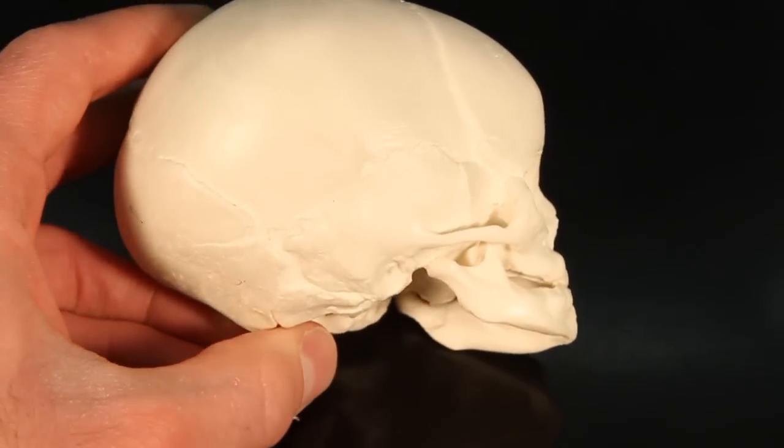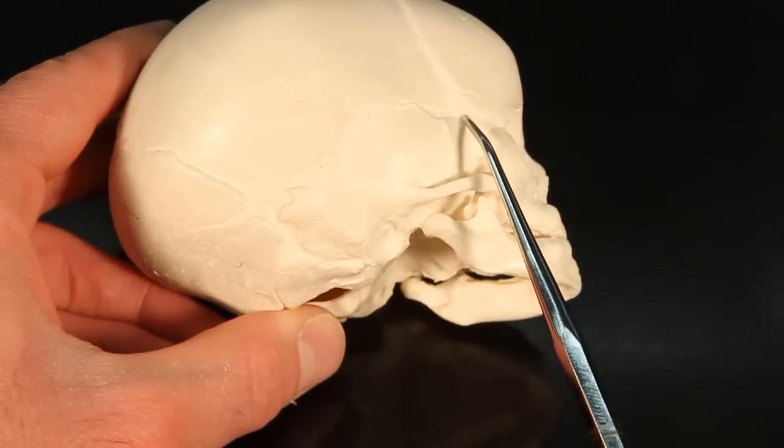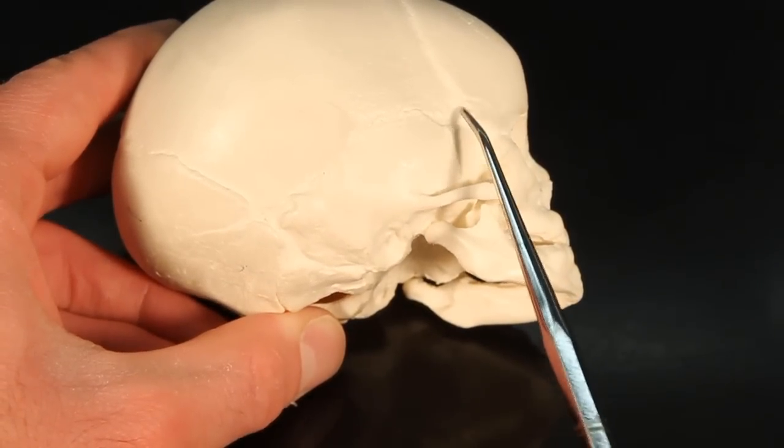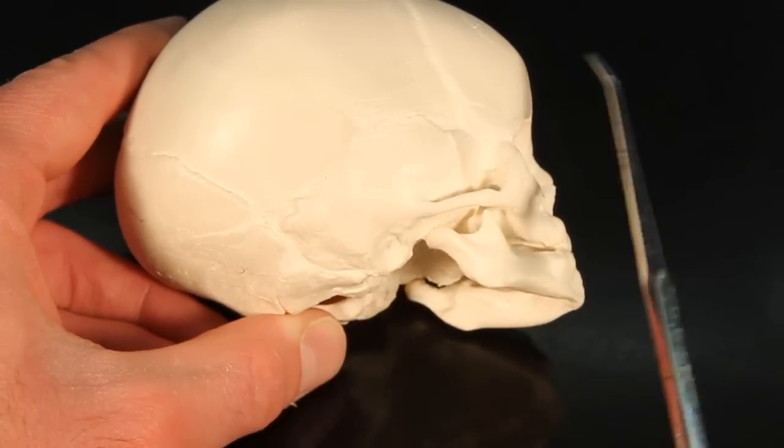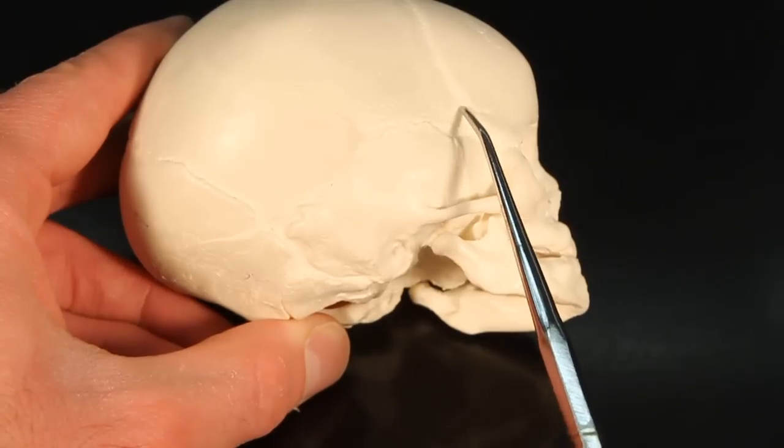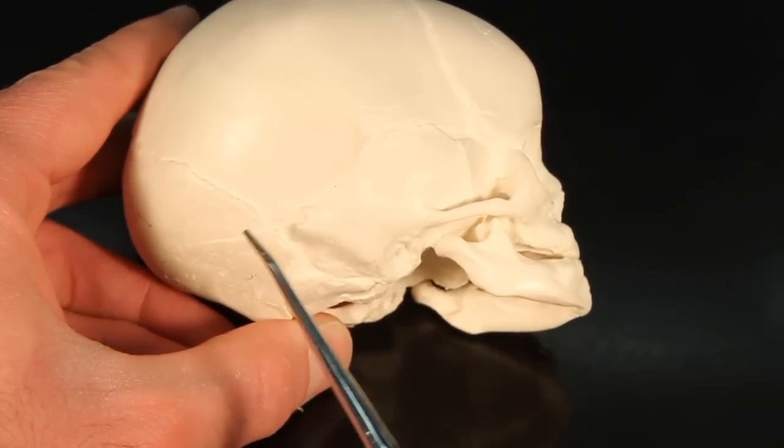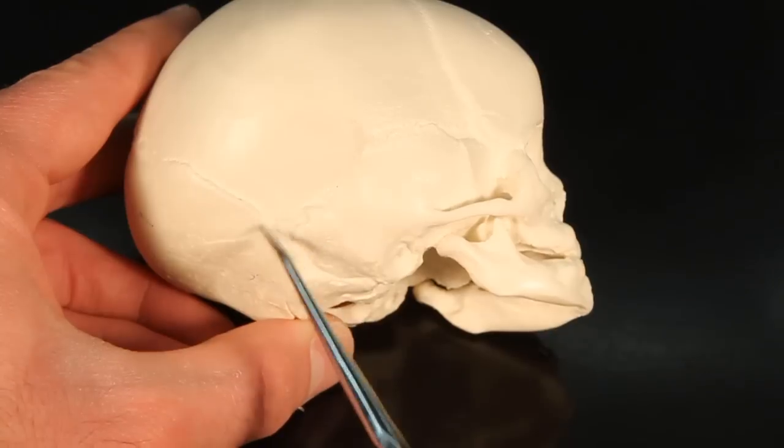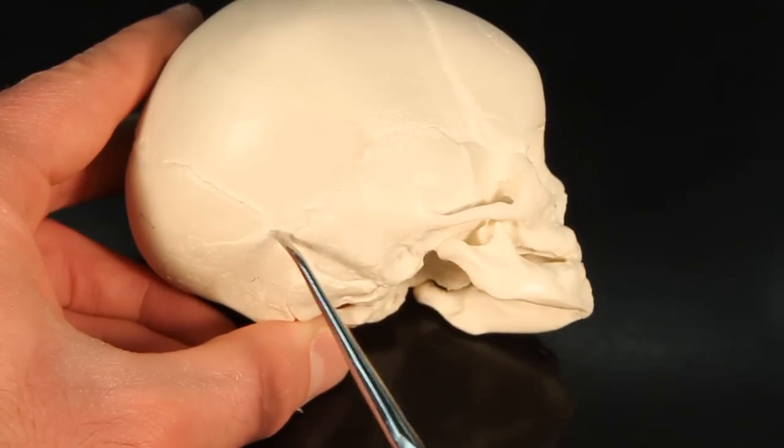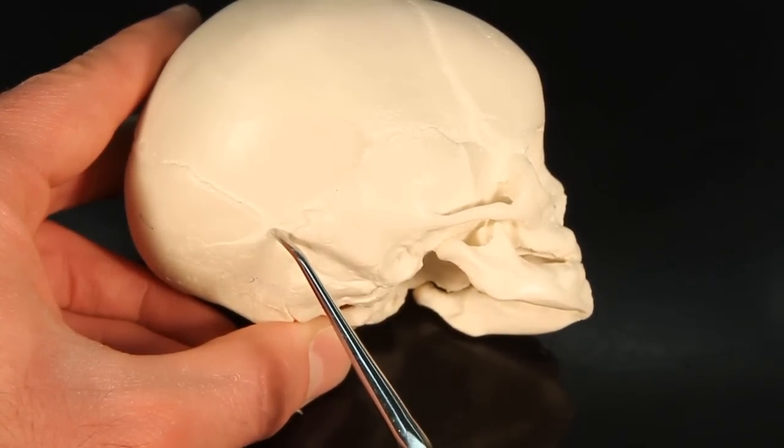On the side of the skull, we have two fontanelles. One is your anterior lateral, anterior front, lateral side, or also known as the sphenoidal fontanelle. And then we have the posterior lateral, or also known as the mastoid fontanelle.